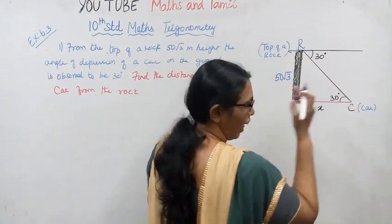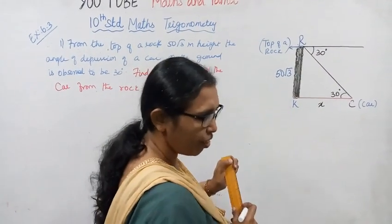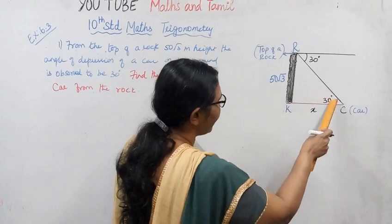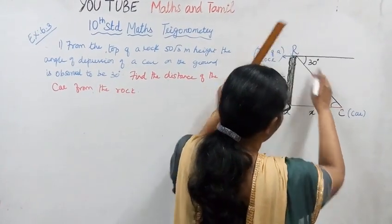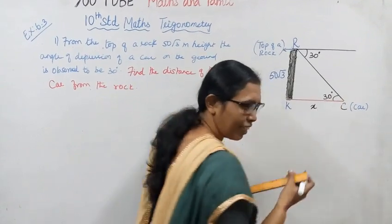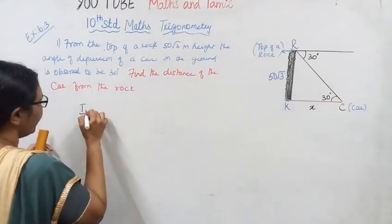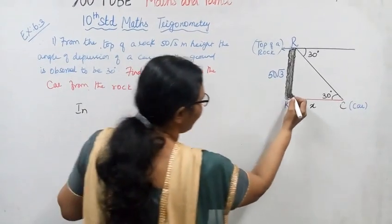By the property of alternate interior angles being equal, when we draw a horizontal line from the top of the rock, the angle at the car position in the right triangle is also 30 degrees.